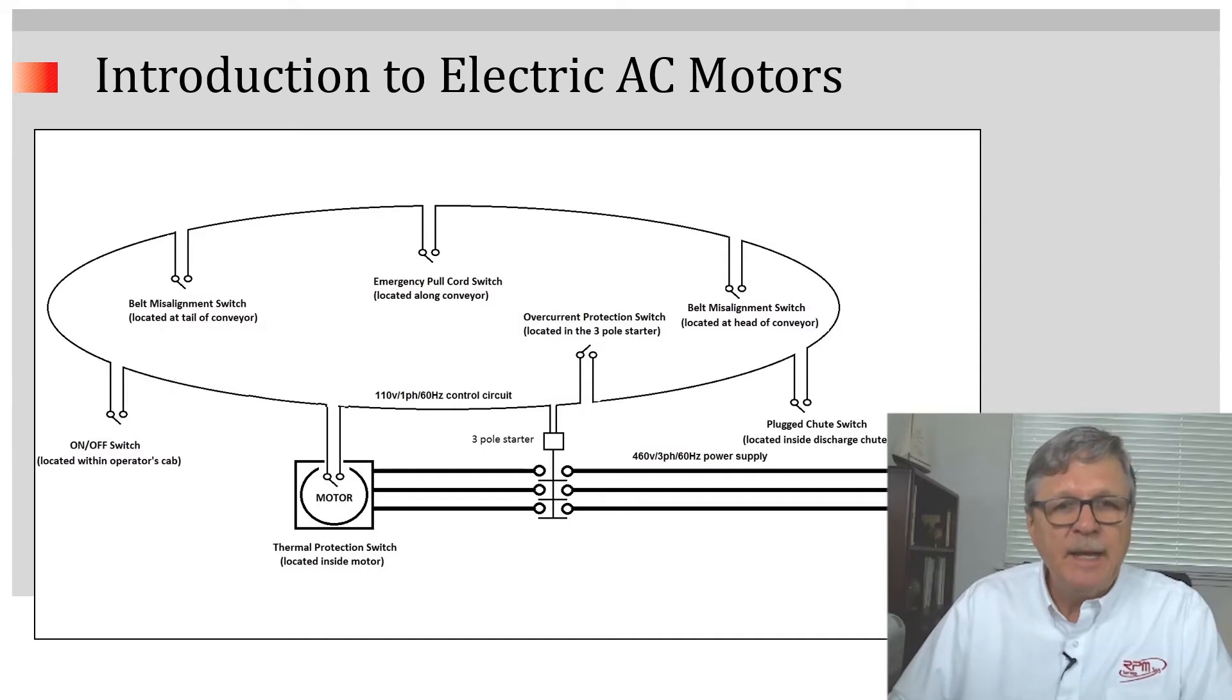This illustrates a normally closed control circuit in a typical conveyor belt. Notice that the diagram shows an on-off switch. It shows a belt misalignment switch as we go from left to right, emergency pull cord switch,